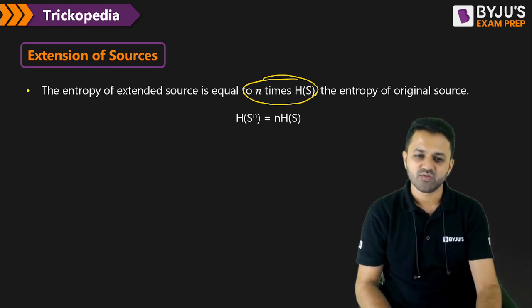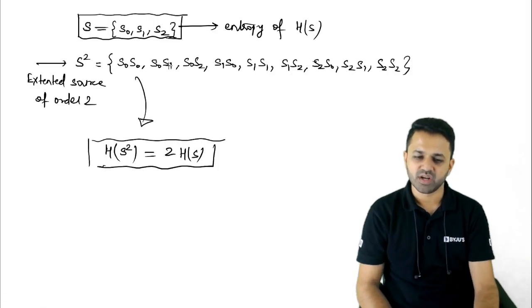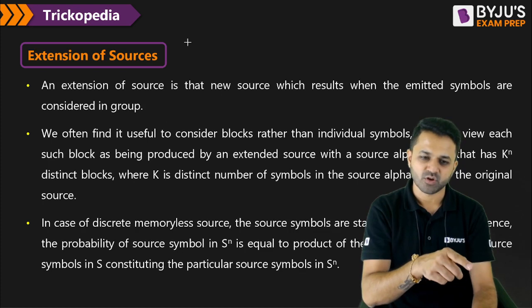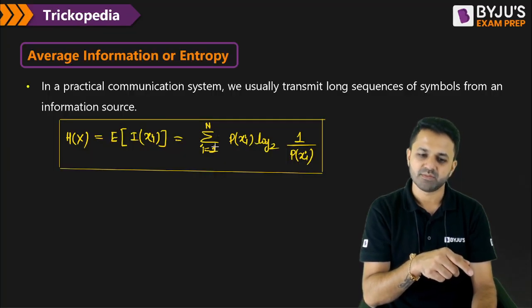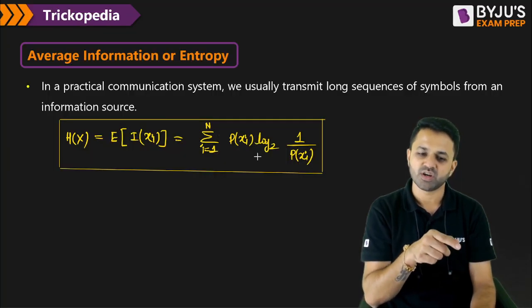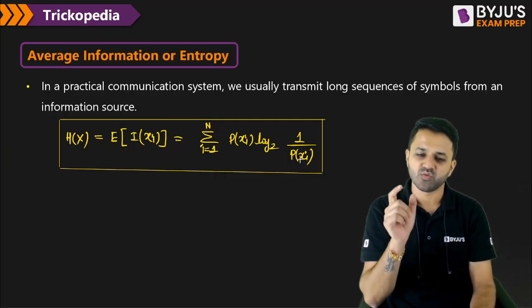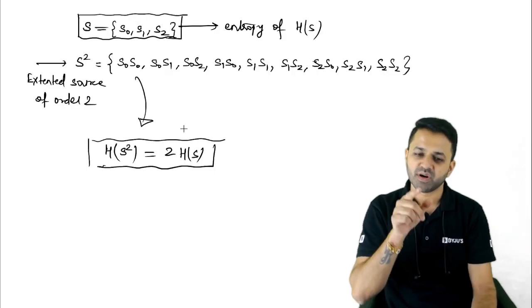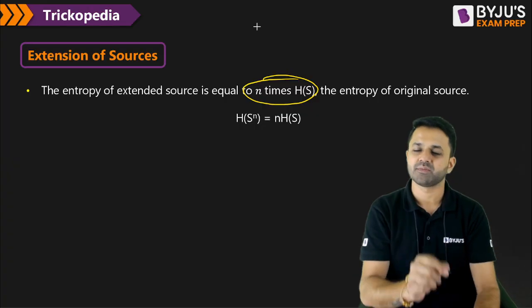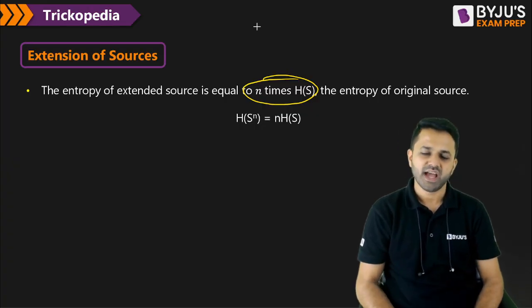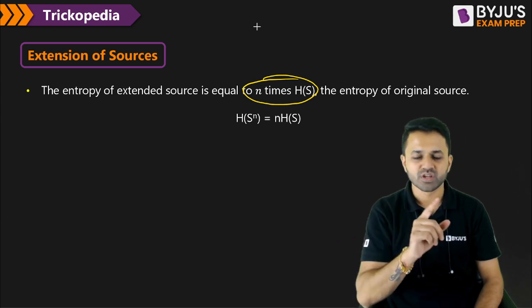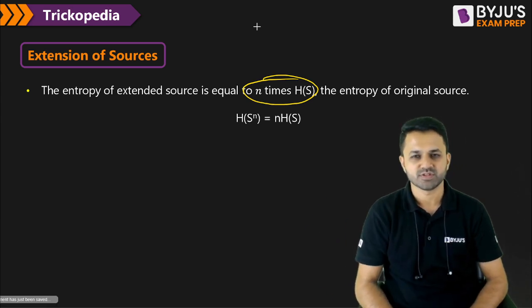Otherwise, what you would have to do is calculate the probability of each symbol present in S^2 and then apply the full formula — summation i=1 to n of P * log base 2 of (1/P) — to get the entropy of the extended source. But instead of doing all that, you can simply multiply the order of the extension with the original entropy of the source.